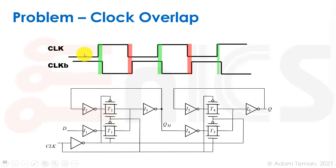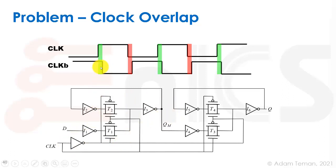What happens is that the clock bar — the inverted clock, clock B over here — is delayed a bit by the TPD of this inverter from the original clock. Usually we'll put this clock inverter inside the actual flip-flop to make this transition as short as possible and as local as possible, and not have a lot of skew between the two signals. But still there is some area where we have overlap between the two, where they'll both be positive or both be negative at the same time.